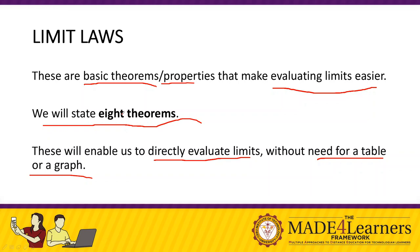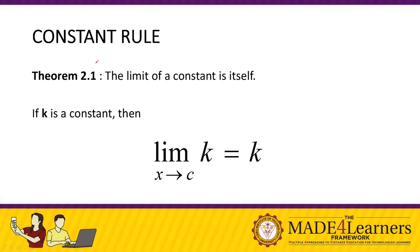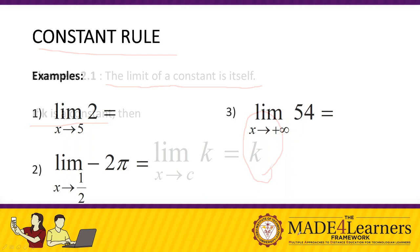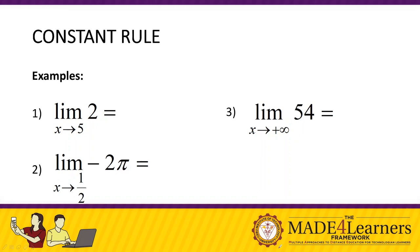Theorem number one: the Constant Rule. This states that the limit of a constant is itself. In symbols, if k is a constant, then the limit of k as x approaches c is just k itself. For example number one, the limit of 2 as x approaches 5 — since 2 is a constant, the answer is just 2.